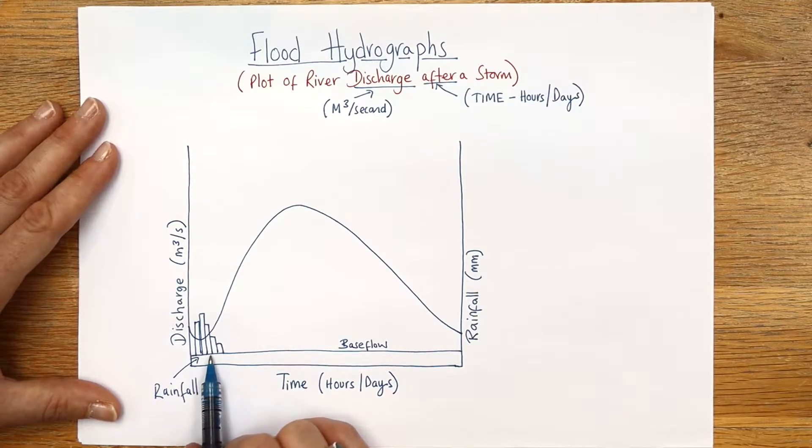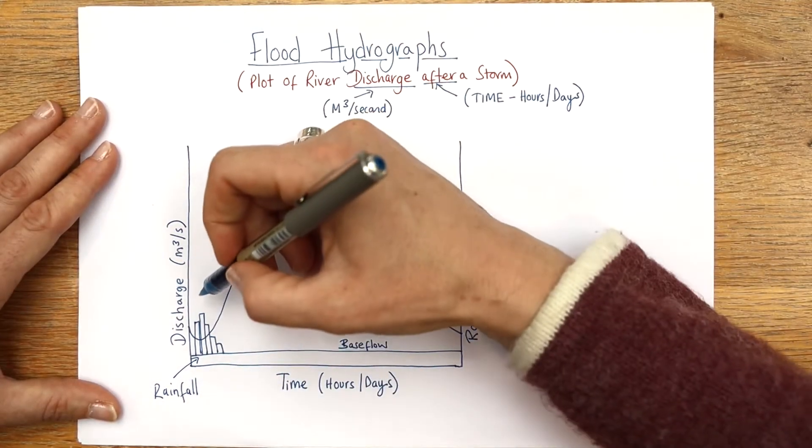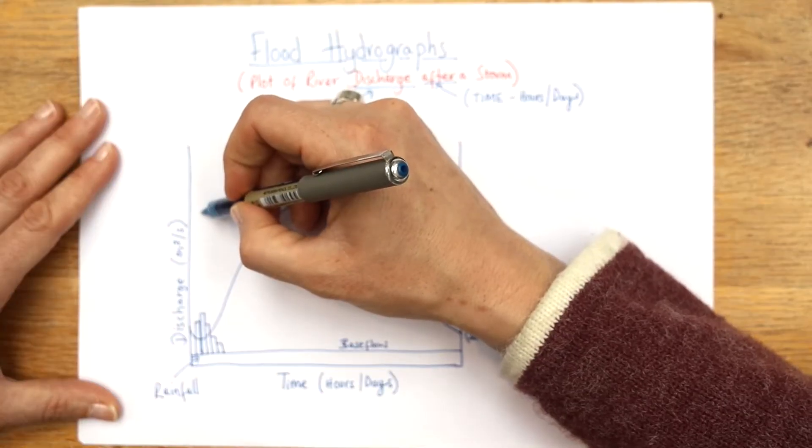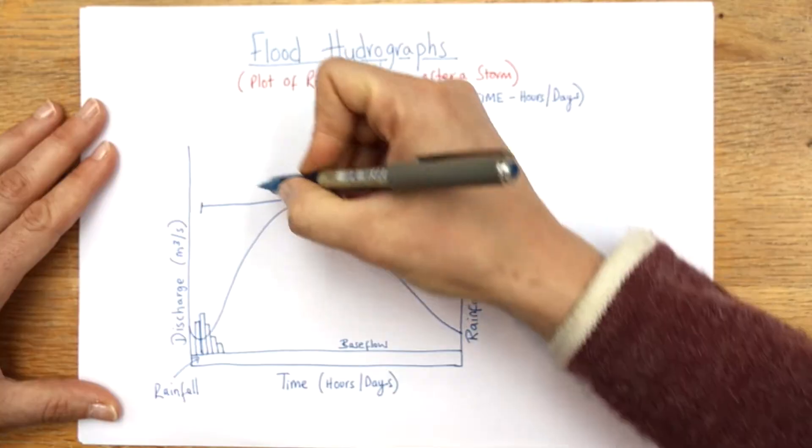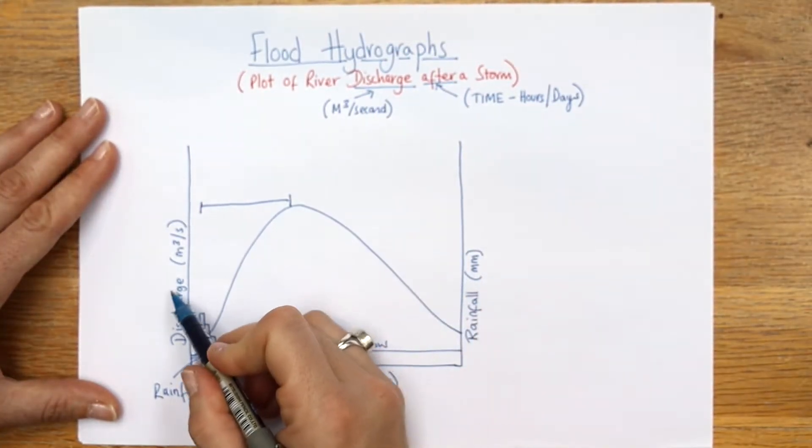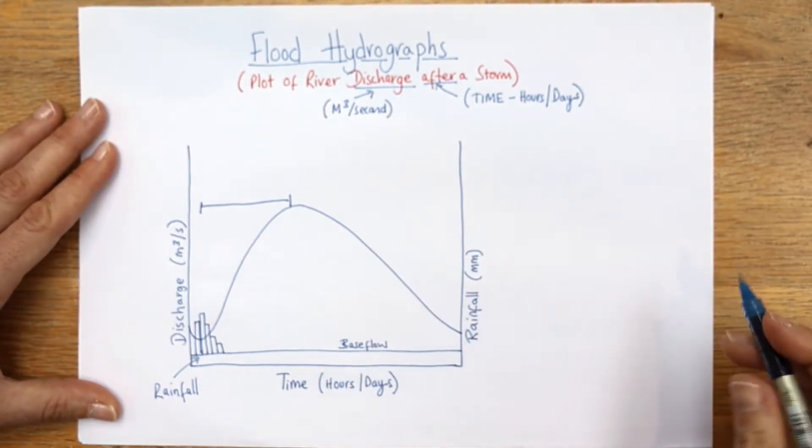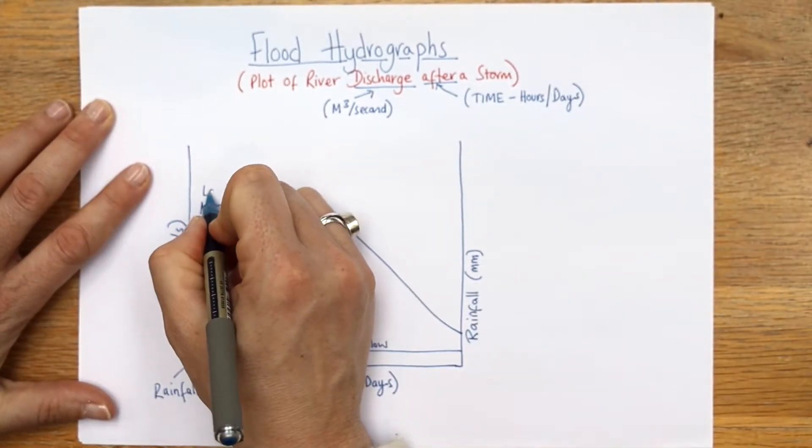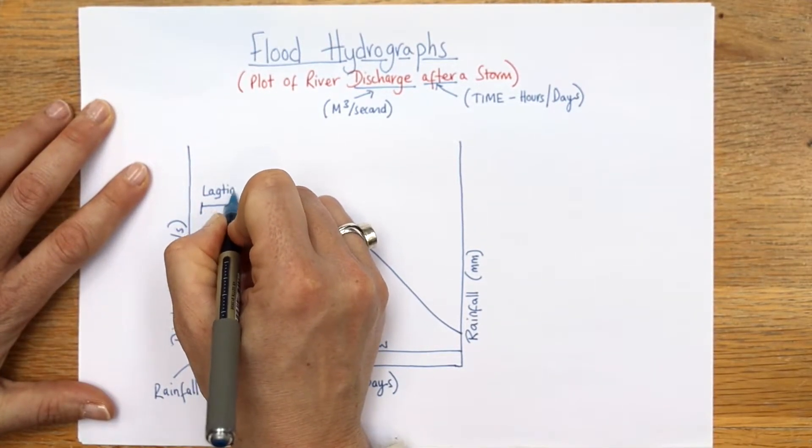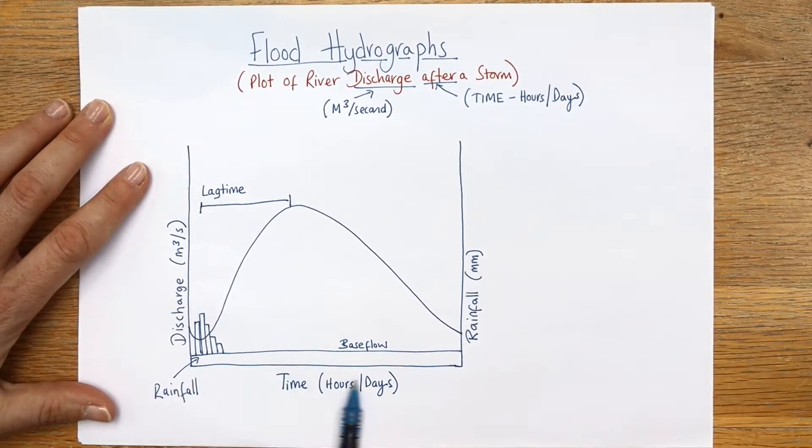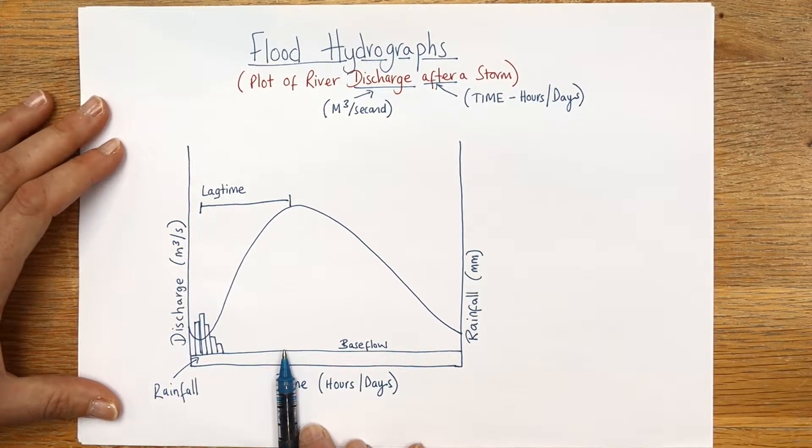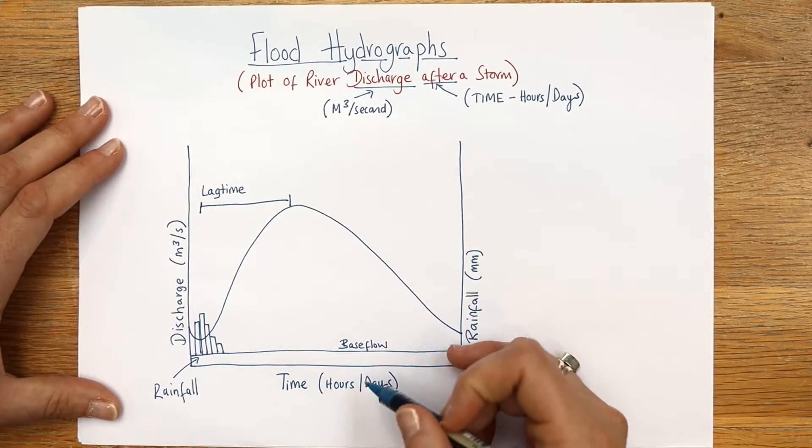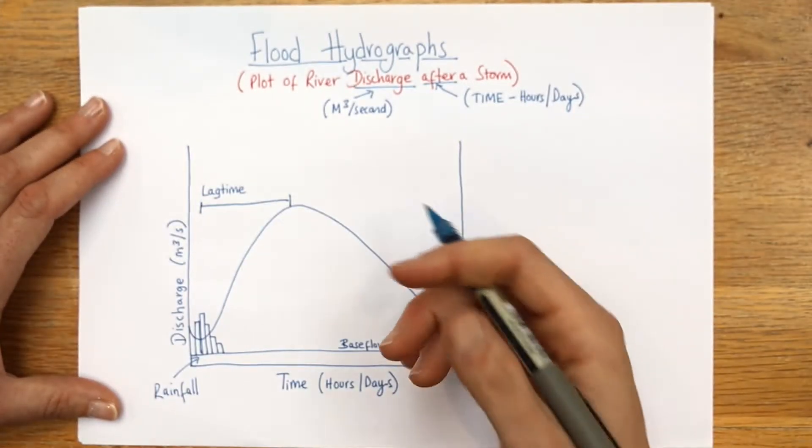There is a lag time between the highest point of rainfall and the highest discharge - remember we're measuring discharge from the river now. That is called the lag time. Here I haven't got the exact measurements, but we could say it's two days, three days. Remember that the reason for that is water takes time to get to the river. It might be caught in trees, it might be soaked up in the ground, it could be many reasons why it's not exactly there yet.